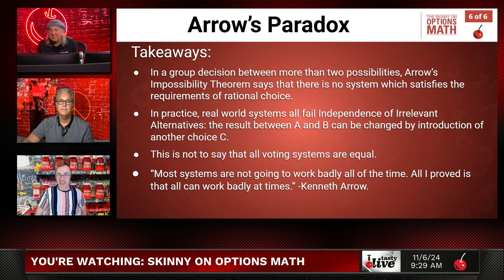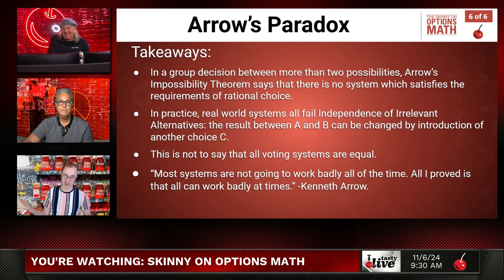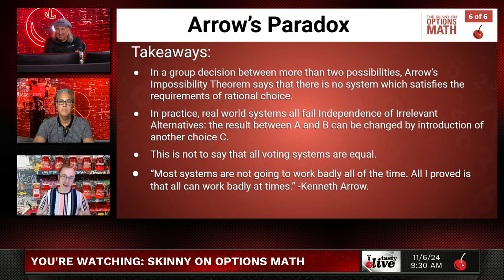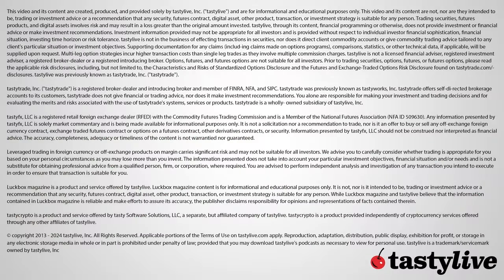Arrow's paradox — our takeaways. In a group decision between more than two possibilities, Arrow's impossibility theorem says there is no system which satisfies the requirements of rational choice. In practice, real-world systems all fail to uphold independence of irrelevant alternatives — the result between A and B can be changed by the introduction of another choice C. Having been offered cherry pie, you might switch from apple to blueberry. This does not say all voting systems are equal. In Arrow's own words from the original paper: 'Most systems are not going to work badly all of the time. All I proved is that all can work badly at times.' We should still look for systems that do a better job more often — but you can't let perfect be the enemy of the good, because there is no such thing as a perfect voting system.